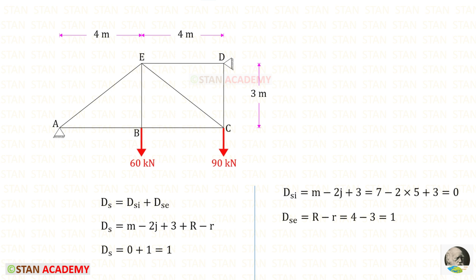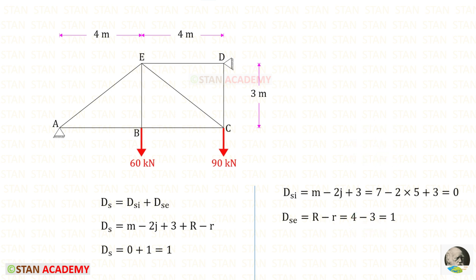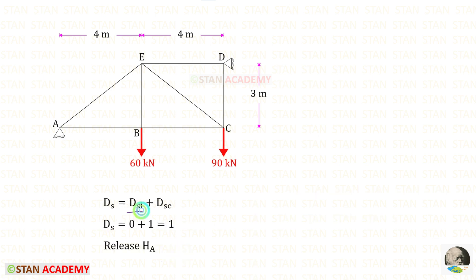To find the external degree of static indeterminacy, r is the number of reactions to be found. At points A and D there are hinged supports, each giving two reactions — two and two, so totally four. Small r is the available equilibrium conditions: there are three — Sigma V = 0, Sigma H = 0, and Sigma M = 0. For the degree of external static indeterminacy we get 1. So the total degree of static indeterminacy of the truss is 1, and we have only external static indeterminacy.